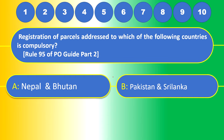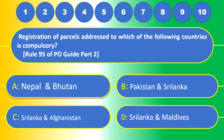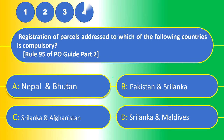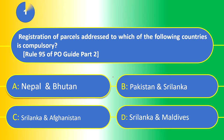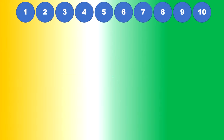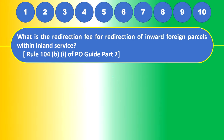Registration of parcels addressed to which of the following countries is compulsory — Rule 95 of PO Guide Part 2 — (a) Nepal and Bhutan, (b) Pakistan and Sri Lanka, (c) Sri Lanka and Afghanistan, or (d) Sri Lanka and Maldives? The answer is (a) Nepal and Bhutan — for Nepal and Bhutan, registration of parcels is compulsory.